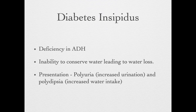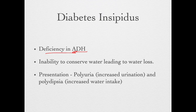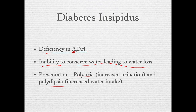For pituitary pathology, you need to know about diabetes insipidus, not to be confused with diabetes mellitus. Diabetes insipidus is characterized by increased urination and is caused by a deficiency in ADH secretion. Since ADH helps absorb water and electrolytes, its deficiency leads to an inability to conserve water and excess water loss. A patient presents with polyuria or increased urination and polydipsia or increased water intake to compensate.